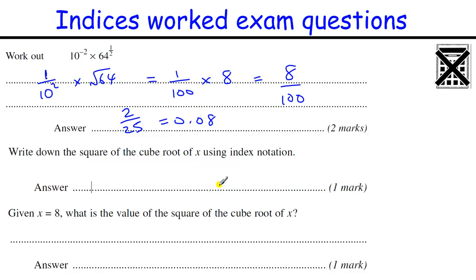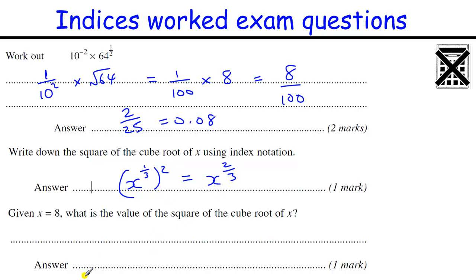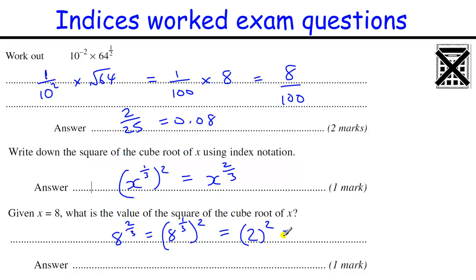Write the square of the cube root of x using index notation. The cube root is x to the one-third, and squaring that gives x to the two-thirds, because 2 times one-third is two-thirds. If x equals 8, then 8 to the two-thirds: the cube root of 8 is 2, and 2 squared is 4.